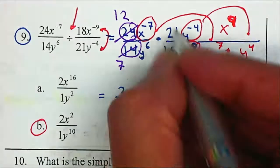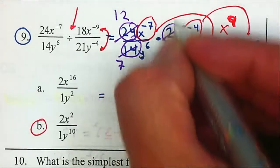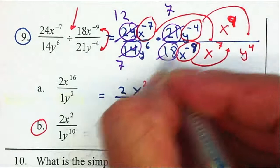21 and 18 I can divide by 3. So it gives me 7 and that gives me 6.